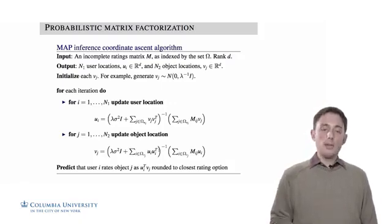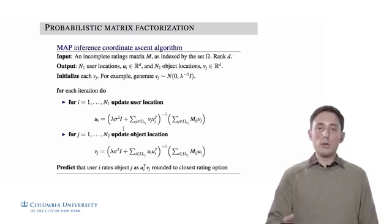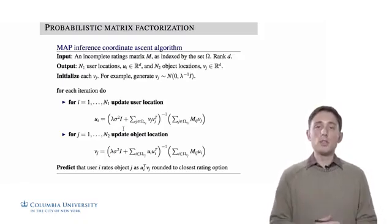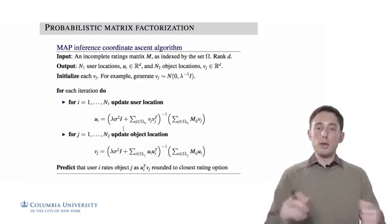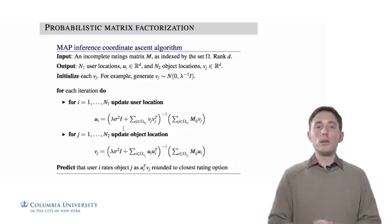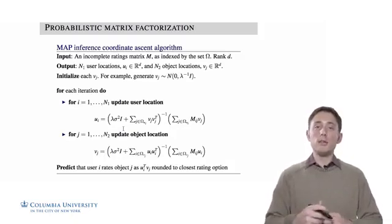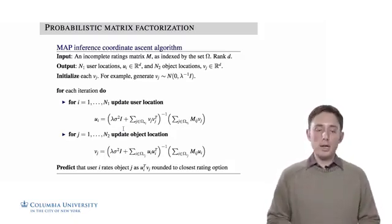We iterate back and forth between these two steps, and eventually the algorithm will converge. We can assess this convergence by calculating the log of the joint likelihood. That's the function we're trying to maximize, so we can evaluate that function after each iteration to see if it's converged or not.